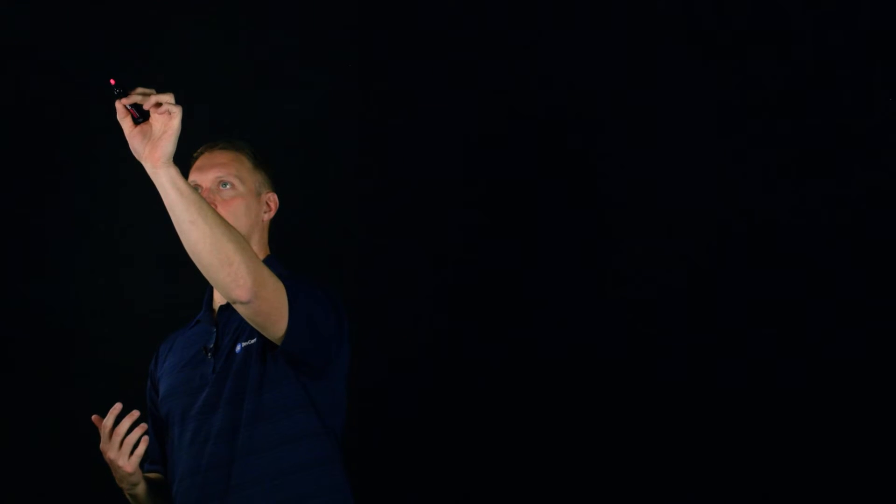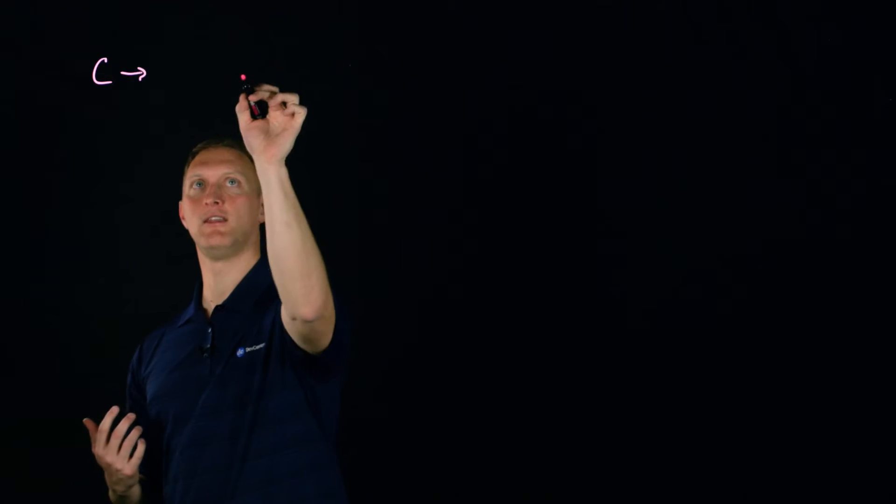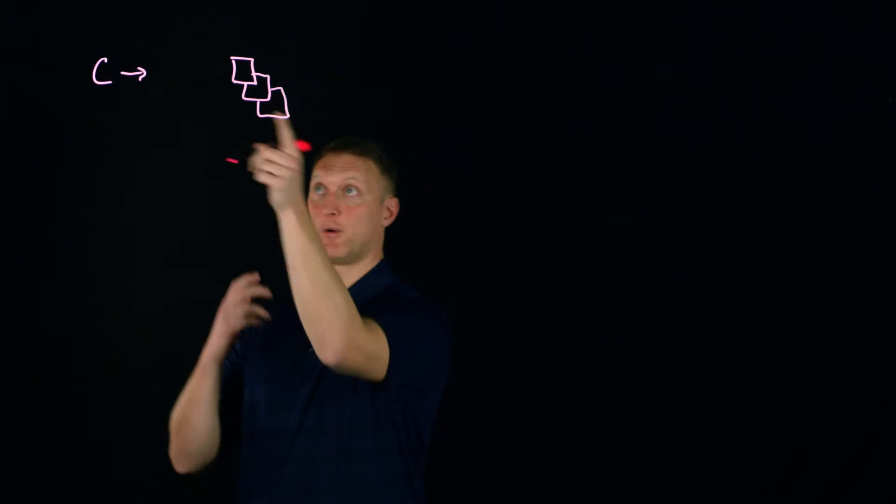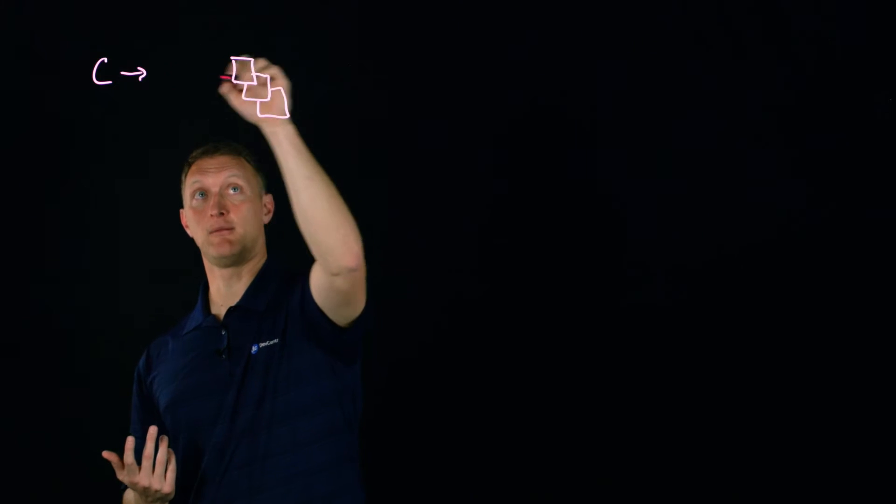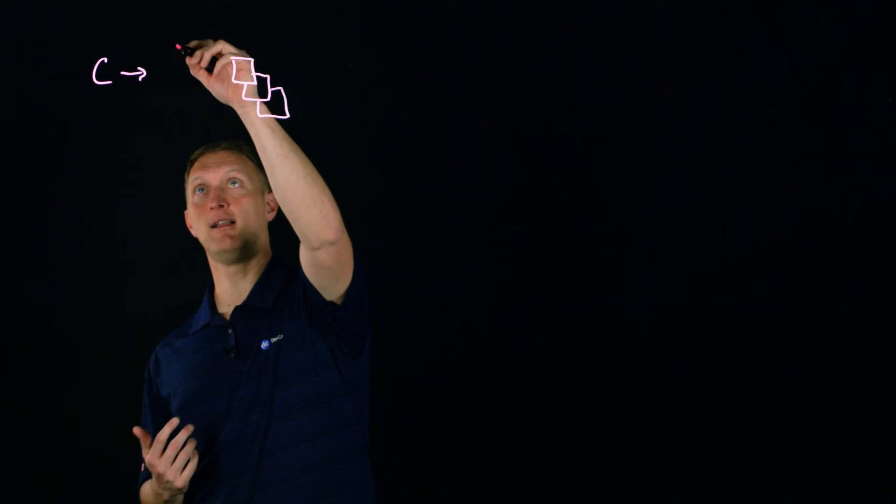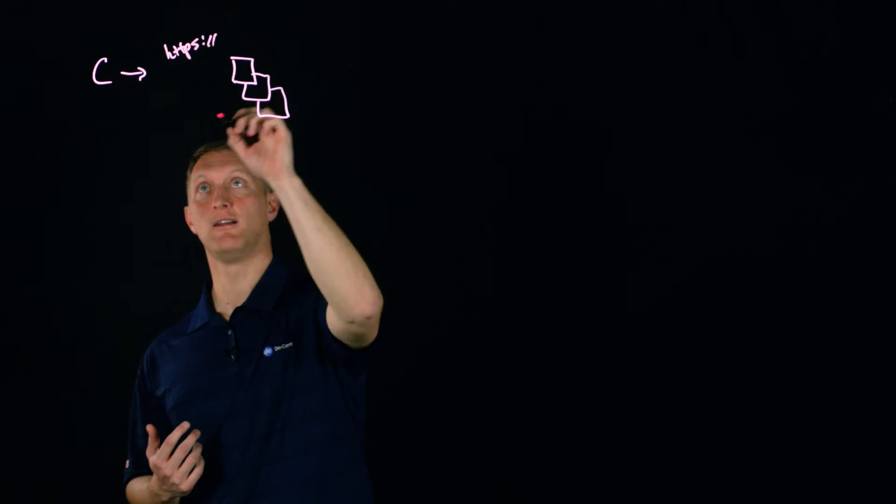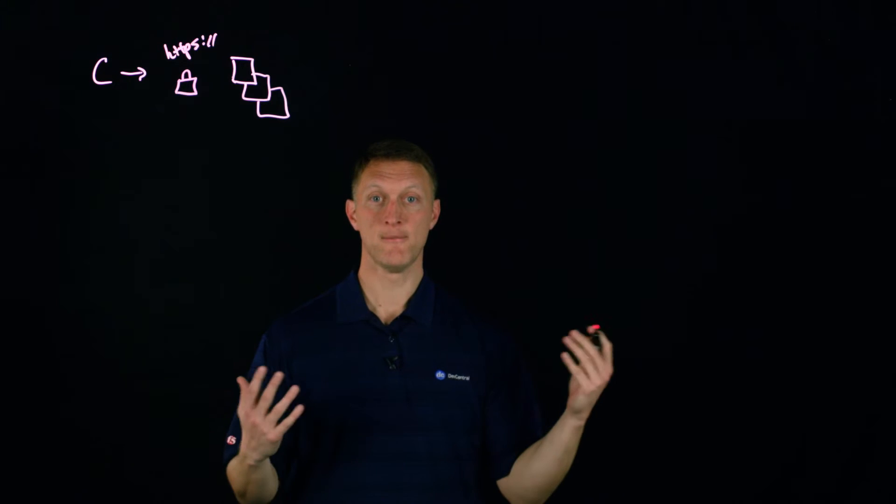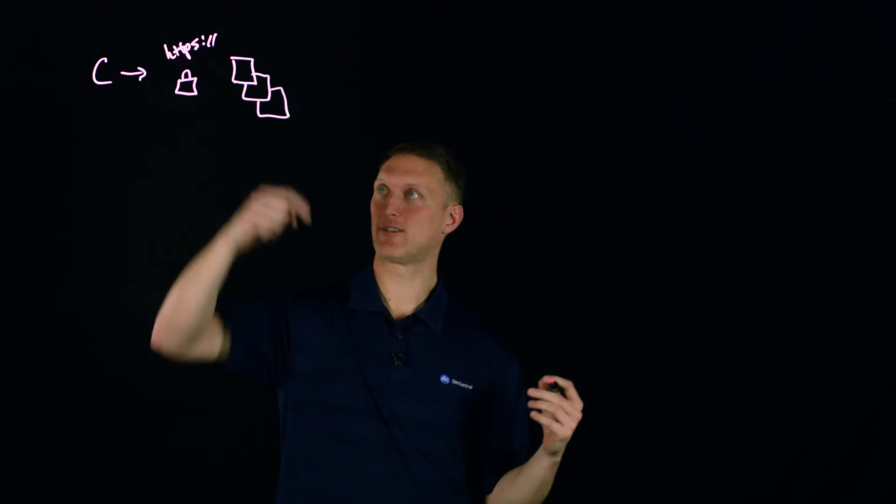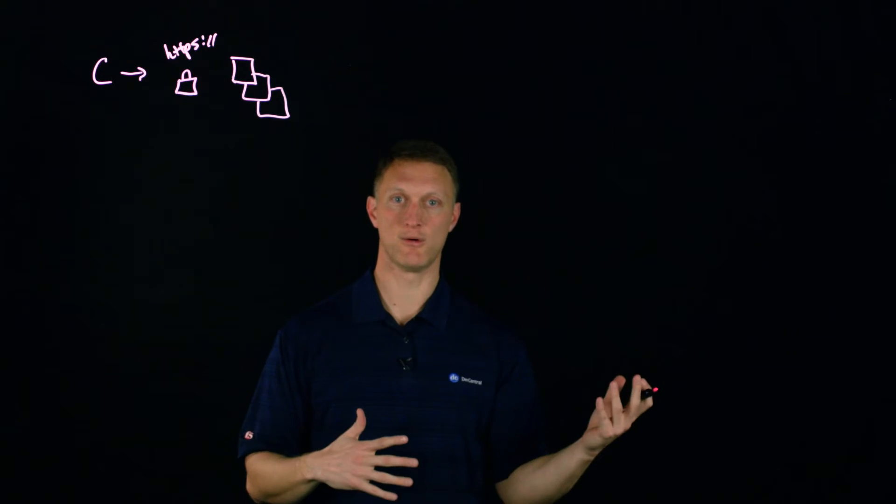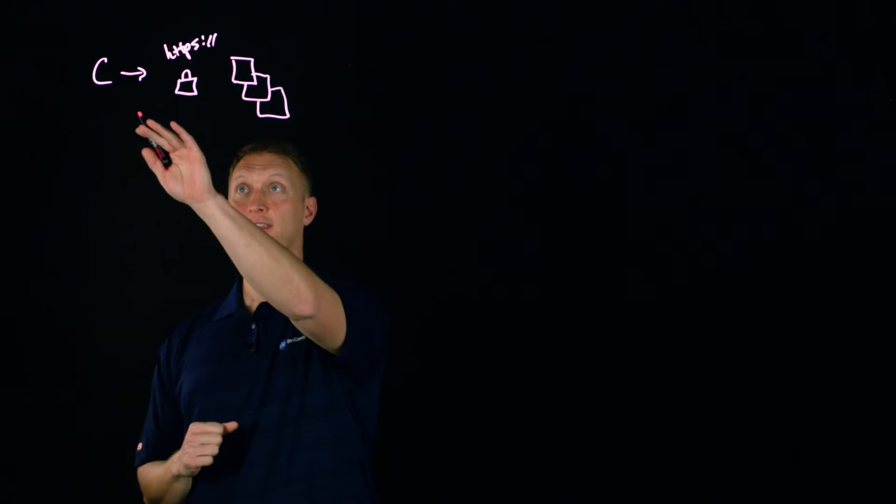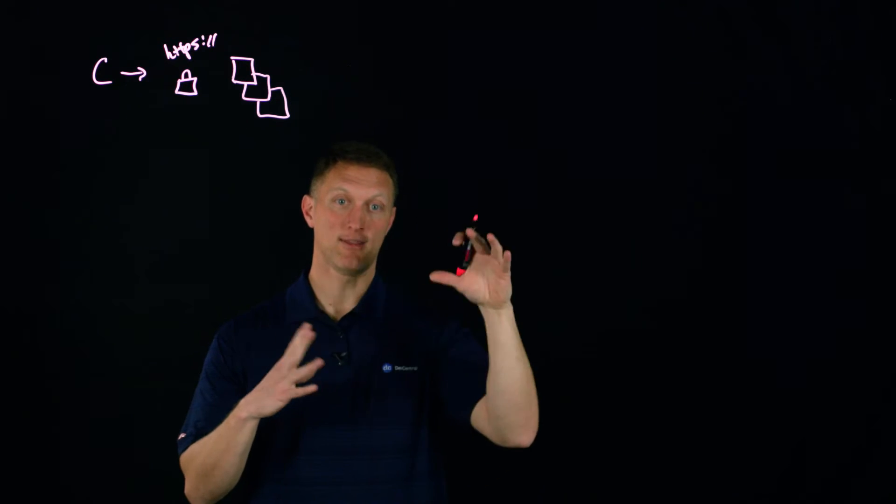The actual implementation we'll get into. To start off, I'll draw a picture. Maybe you've got a client out here in the internet somewhere that wants to request your backend web servers. As that traffic starts to flow, a lot of times these backend web servers use encryption. So I'll put HTTPS right here with a little lock.